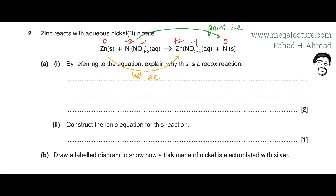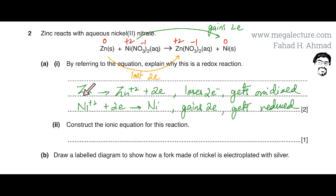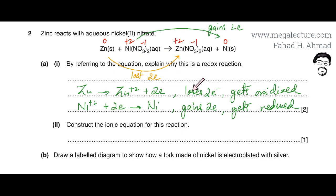On the other hand, nickel was plus two initially and is now neutral, meaning it gains two electrons. Whenever there is a loss and gain of electrons, it is a redox reaction. Zinc goes from neutral to plus two, losing two electrons, so it is being oxidized.